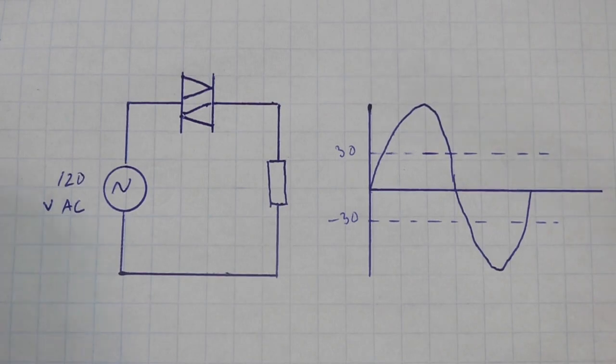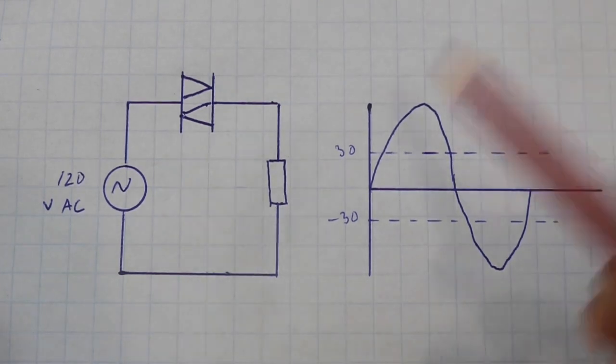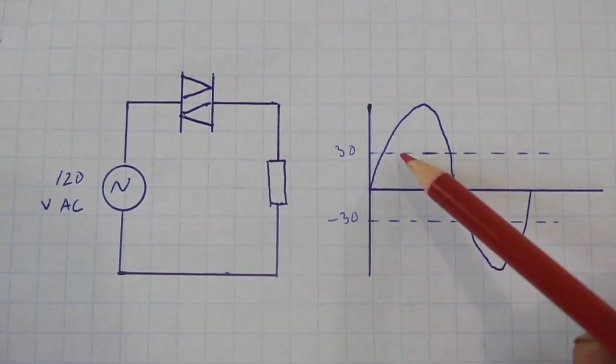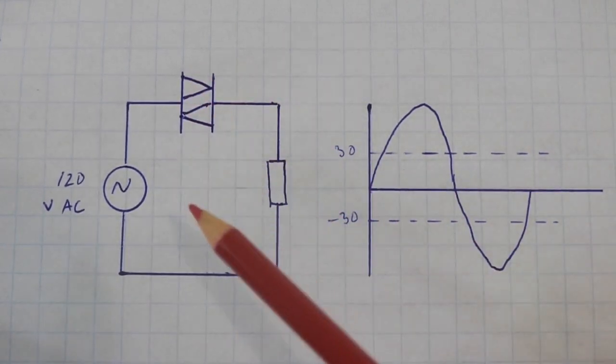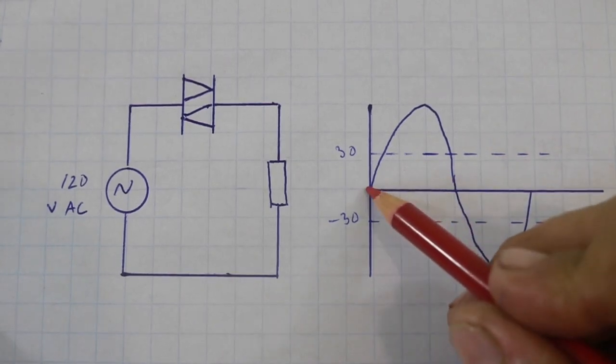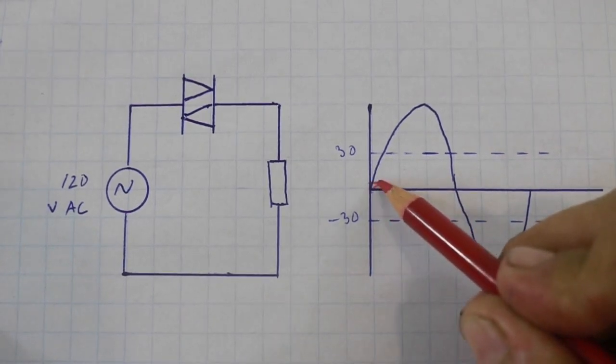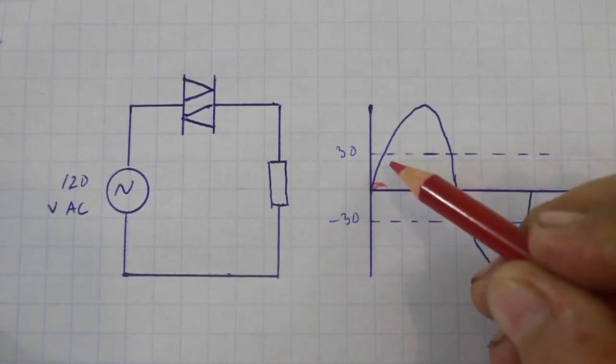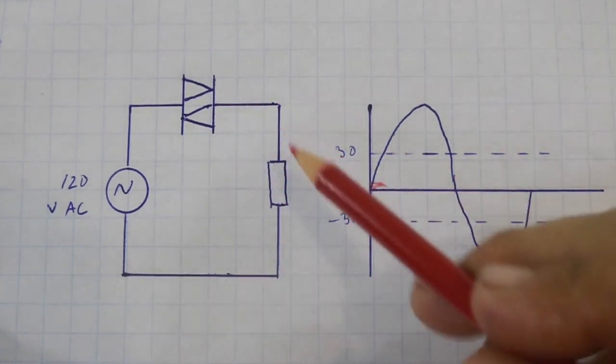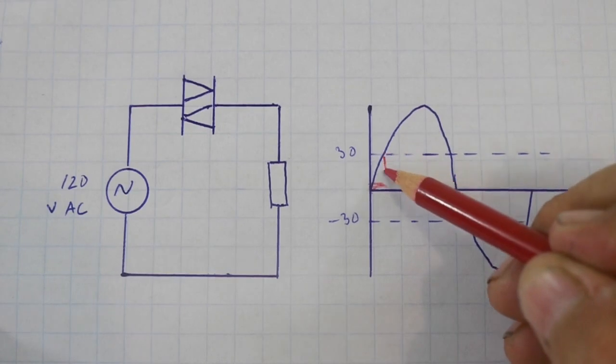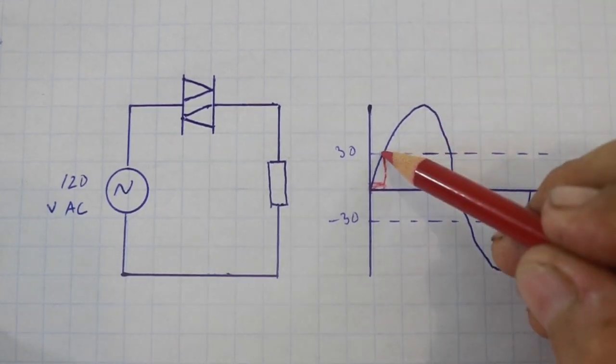As we mentioned before, when the voltage is less than 30 volts this is open and no current flows through the circuit. I am going to draw the current, but when the voltage is at 30 volts it starts to conduct and remains in the conductive state.